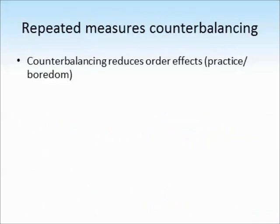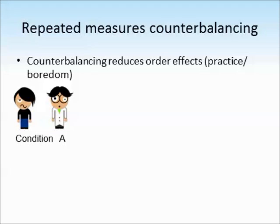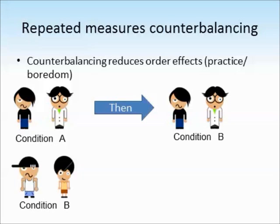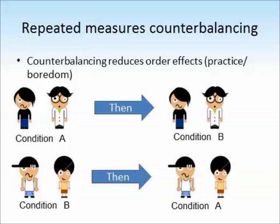One way to overcome the problem of boredom or practice effects is called counterbalancing. Counterbalancing is used to reduce those order effects. Participants in one group would do condition A then condition B, while a different group of participants would start with condition B and then go on to do condition A — reversing the order. This means we don't always work through the conditions in the same order, so if some participants start with condition B we've ruled out the effect of boredom or practice on later conditions.